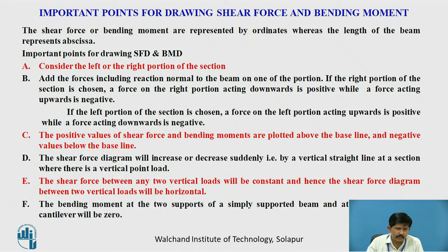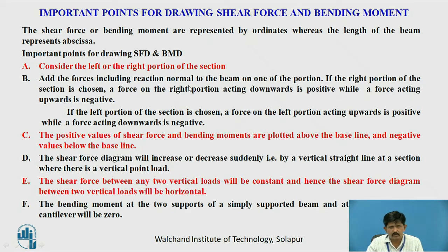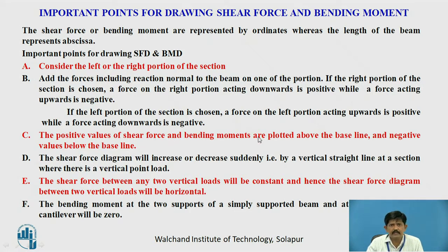There are some important points to remember while drawing the shear force and bending moment diagram. Shear force or bending moment are represented by ordinates on the y-axis, whereas the length of the beam is represented on the x-axis. You have to consider either the left or right portion of the section only, and add the forces including the reaction normal to the beam on one of the portions. If the right portion is chosen, a force acting downward is positive while a force acting upward is negative. If we consider the left portion, it will be vice versa. Positive values are plotted above the baseline and negative values are plotted below the baseline.